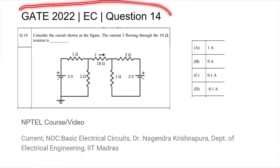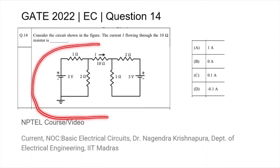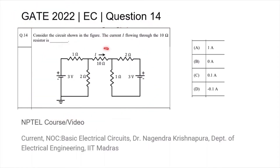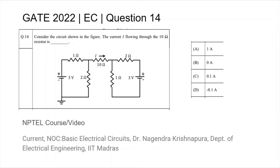This is question 14 from the GATE 2022 EC paper where we are given the following circuit and are asked to find the value of the current I flowing through the 10 ohm resistor. Underneath the question you will find the title of the NPTEL course for a video relevant to this topic.